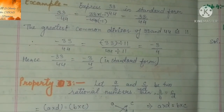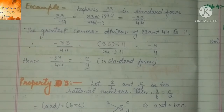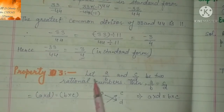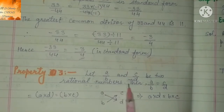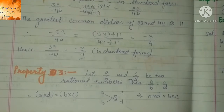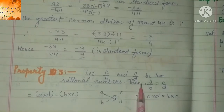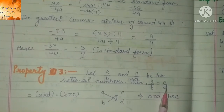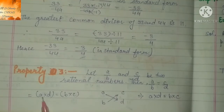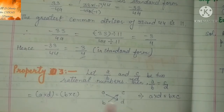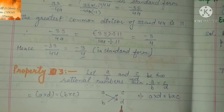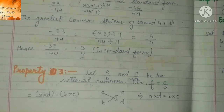उसके बाद आ जाएं property number 3 पे. Property number 3: let A upon B and C upon D be two rational numbers, then A upon B equals C upon D if and only if A into D equals B into C. यानि कि दो rational numbers A upon B और C upon D आपस में equal होंगे जब हम cross वाले numbers को multiply करें — A को D से और B को C से — और इनकी values आपस में equal हों.